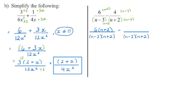So I need to multiply the numerator by n plus 2 to keep it equivalent — that gives us 6 times n plus 2. Then for the second fraction: what did we multiply n plus 2 by to get our common denominator? We can see we multiplied by n minus 3. So the numerator becomes 4 times n minus 3. Now here's what you want to watch: if we were to cancel n minus 3 within one fraction, we'd be left with 4 over n plus 2, which is what we started with — that's how you know we're equivalent. But what we cannot do is cancel across fractions before adding.